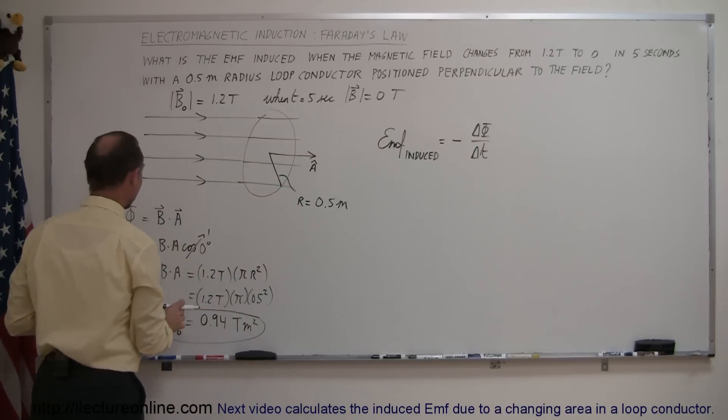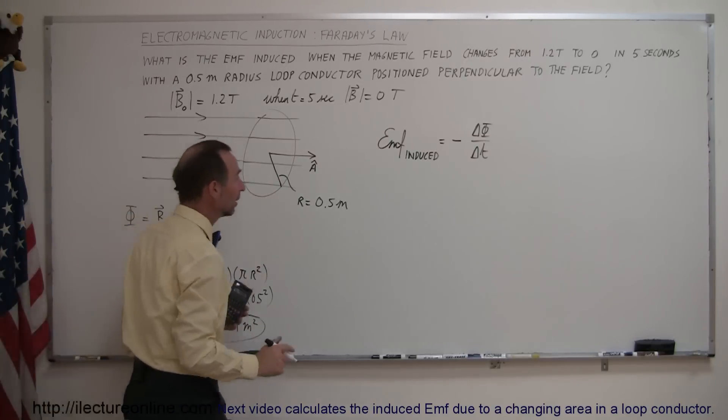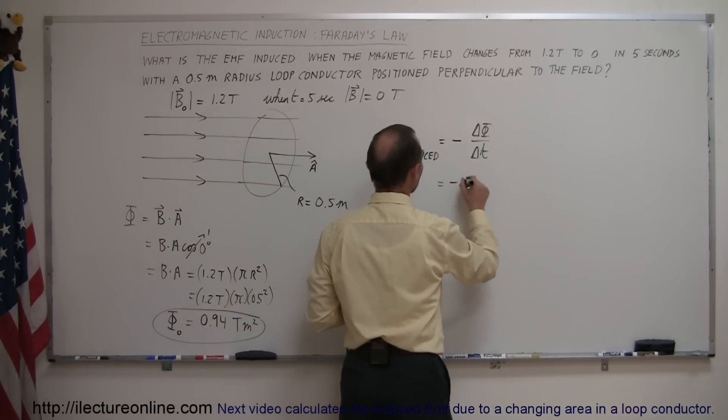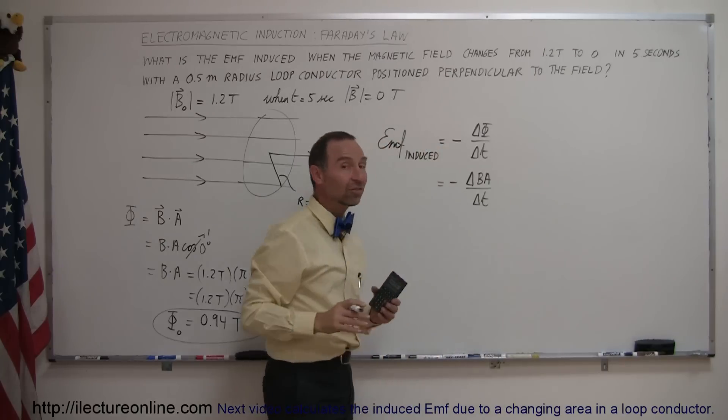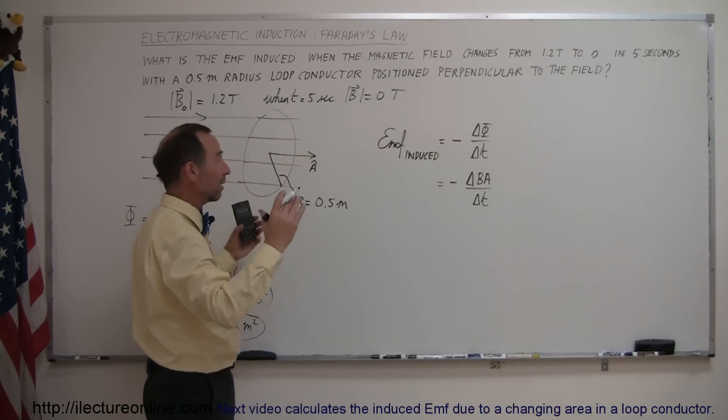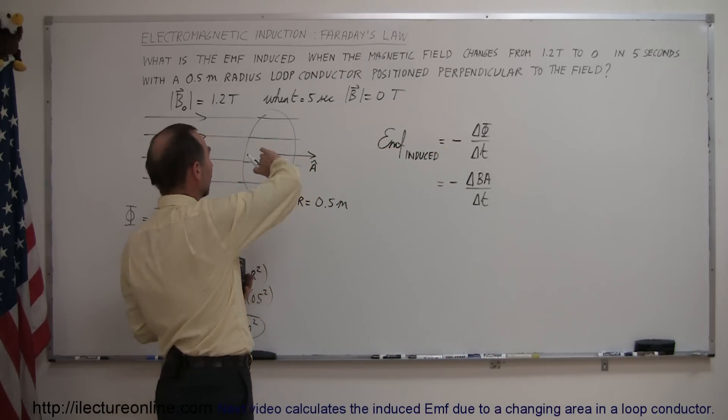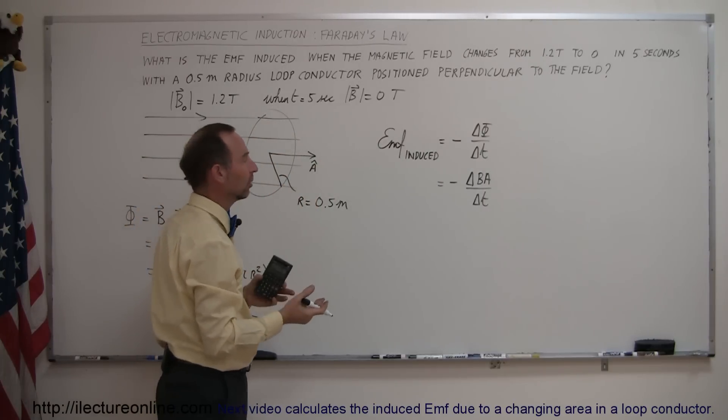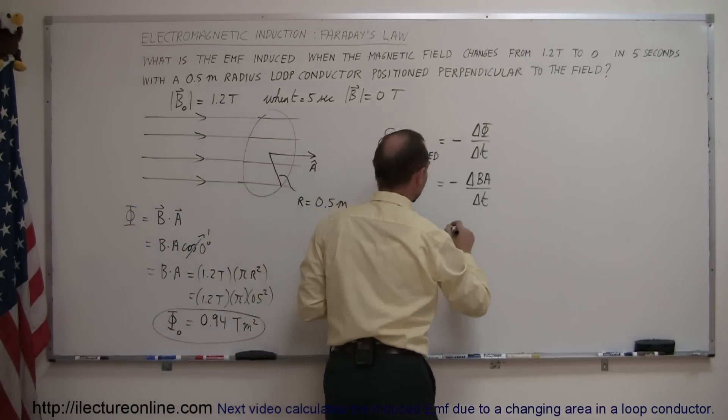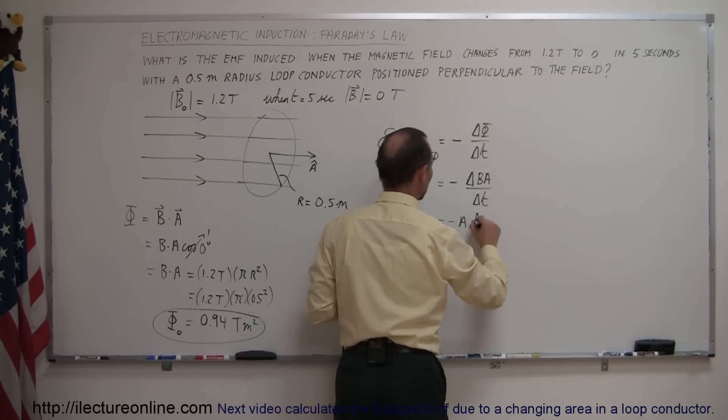Now the flux, as we defined it in this case is B times A, so in this case that would be equal to minus the change in the product of B times A over time, and since in this case the area is not changing, the area is not getting bigger, it is not getting smaller, the loop is not tilting so that the effective area becomes smaller, we can take that out of the delta symbol,